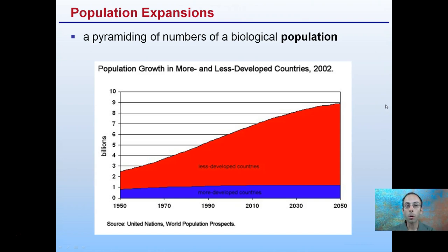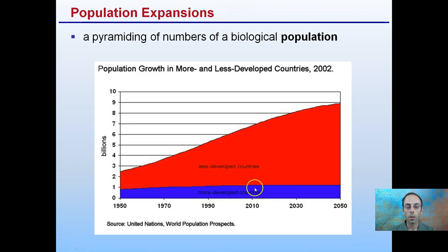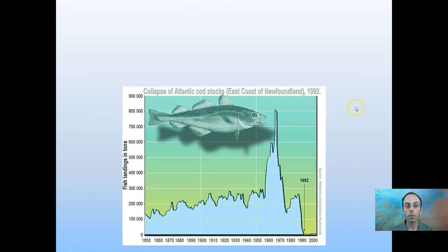Population expansions involve the pyramiding of numbers of a biological population. Based on 2002 data, less developed countries are experiencing a much larger population expansion than more developed countries. Looking at population pyramids, we can see predictions going into the future, with this trend expected to continue.